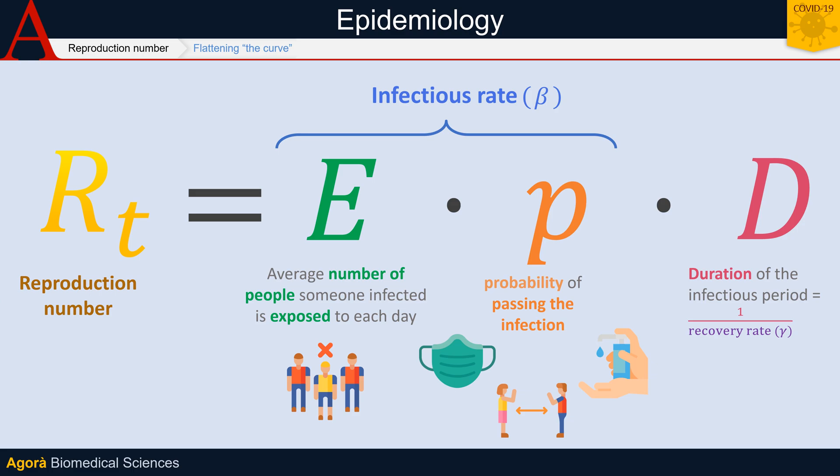R_t goes down by limiting the number of daily contacts to the bare minimum. Second, respecting social distancing — washing your hands, wearing masks — are all ways to reduce the probability of transmitting the infection to each person you come into contact with. Third, staying at home and self-isolation at the first suspicious symptoms can also significantly limit the time for which each infected person can infect others, and effectively reduces R_t. We all therefore have the responsibility and the power to change the evolution of this pandemic — so let's be careful and stay indoors to make R_t lower than one.